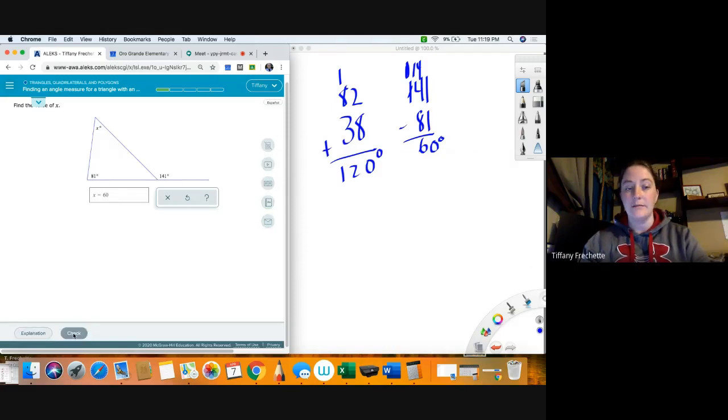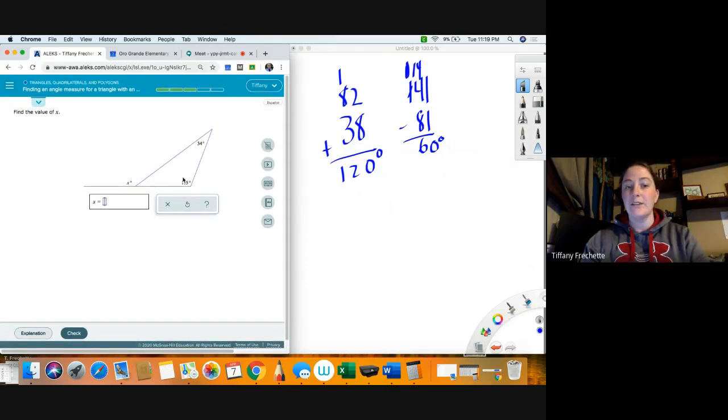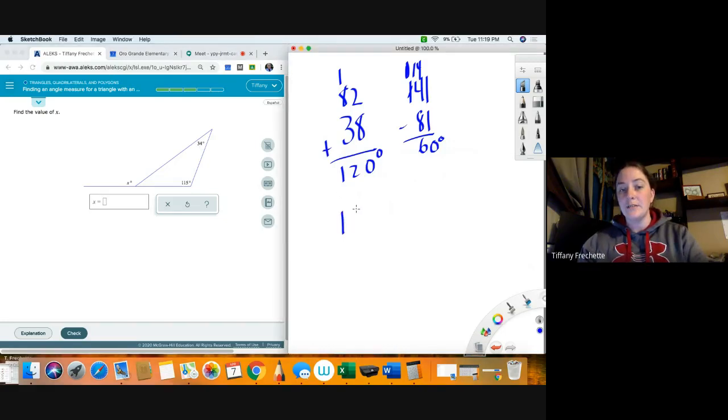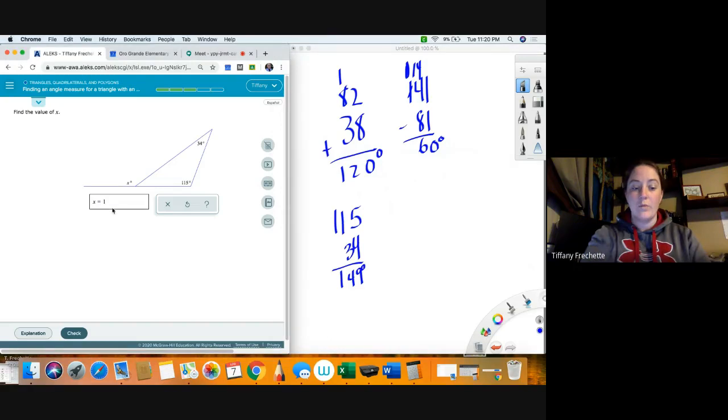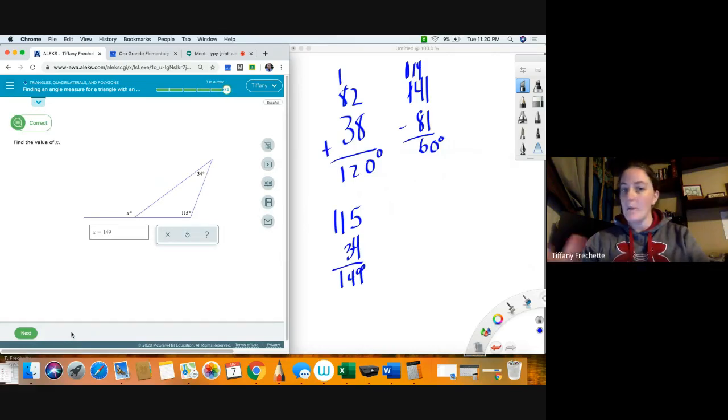Alright, let's check it. Alright, one more. Okay, so now again they're giving me the two inside, so if they're inside together we add them to figure out what that exterior angle is. So we get 149. There we go, we're all done with that one.